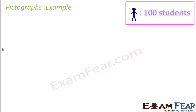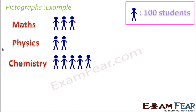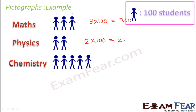So let us take another example of a pictograph showing favorite subjects — maths, physics, and chemistry as options. In a class, the teacher asked which is your favorite subject. Some students opted for maths, some for physics, and some for chemistry. We have drawn a pictograph depending on what students responded, and the pictograph states that one symbol represents 100 students. So how many students like maths? 3 into 100 equals 300 students. How many like physics? 2 into 100 equals 200 students. And 5 into 100 equals 500 students liked chemistry.